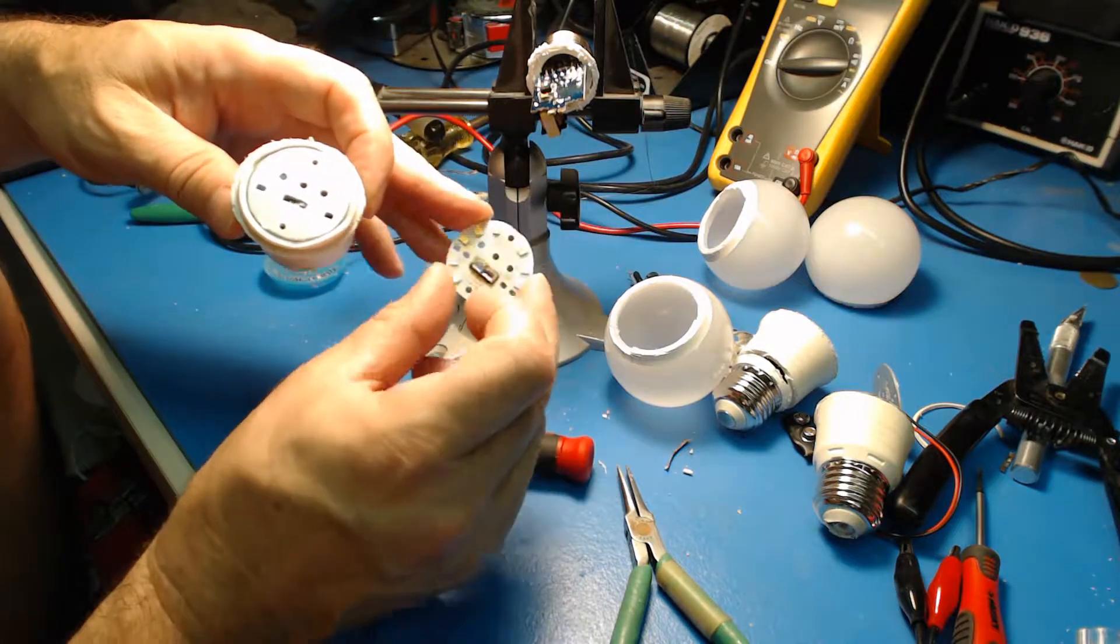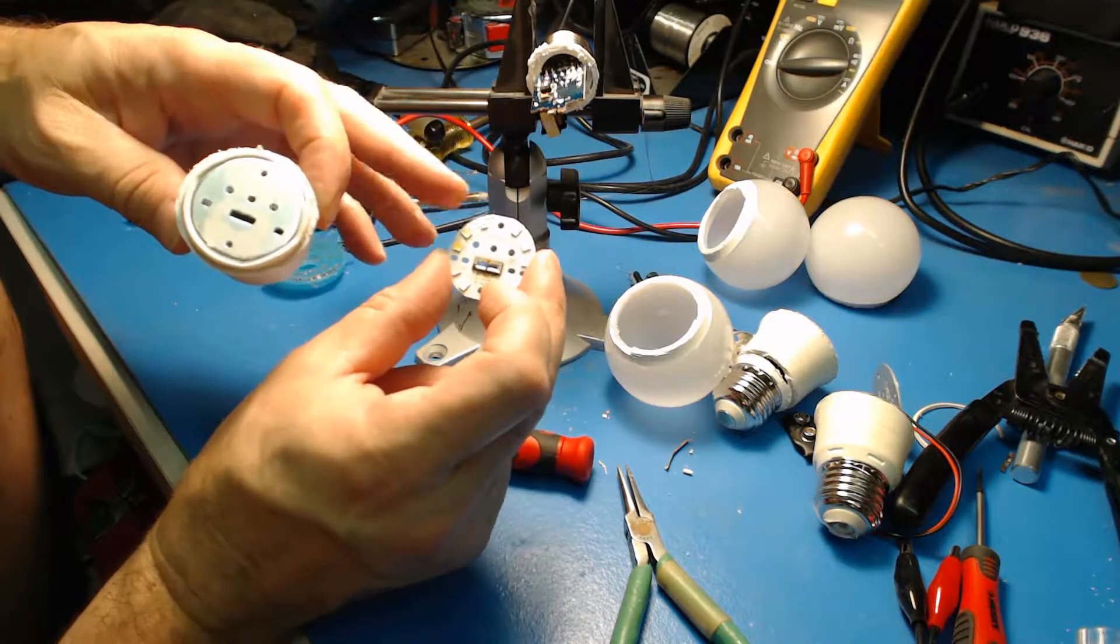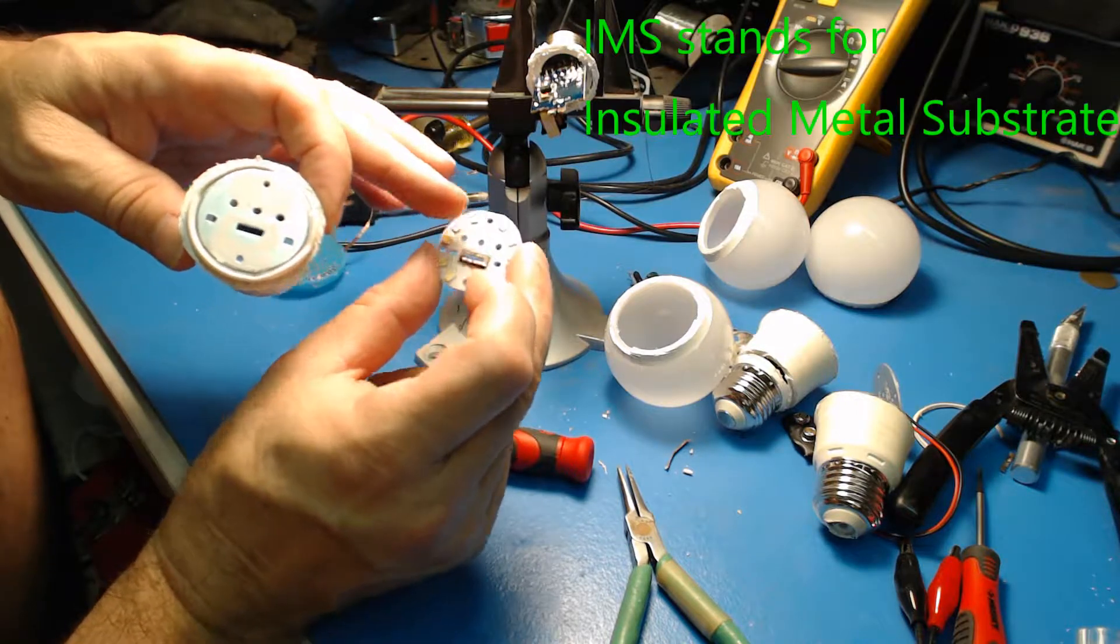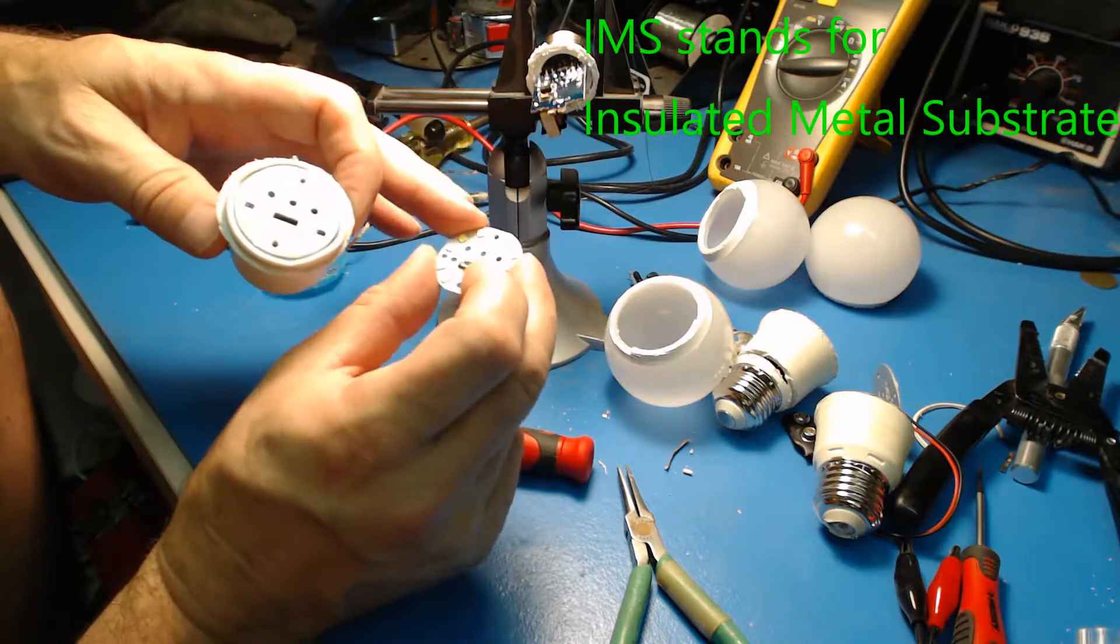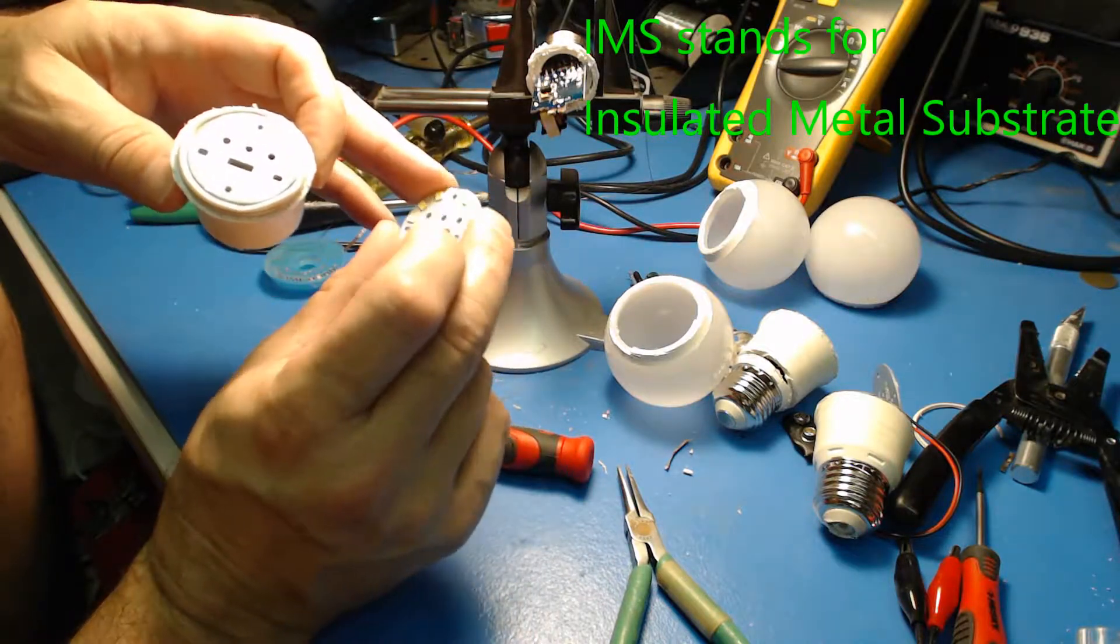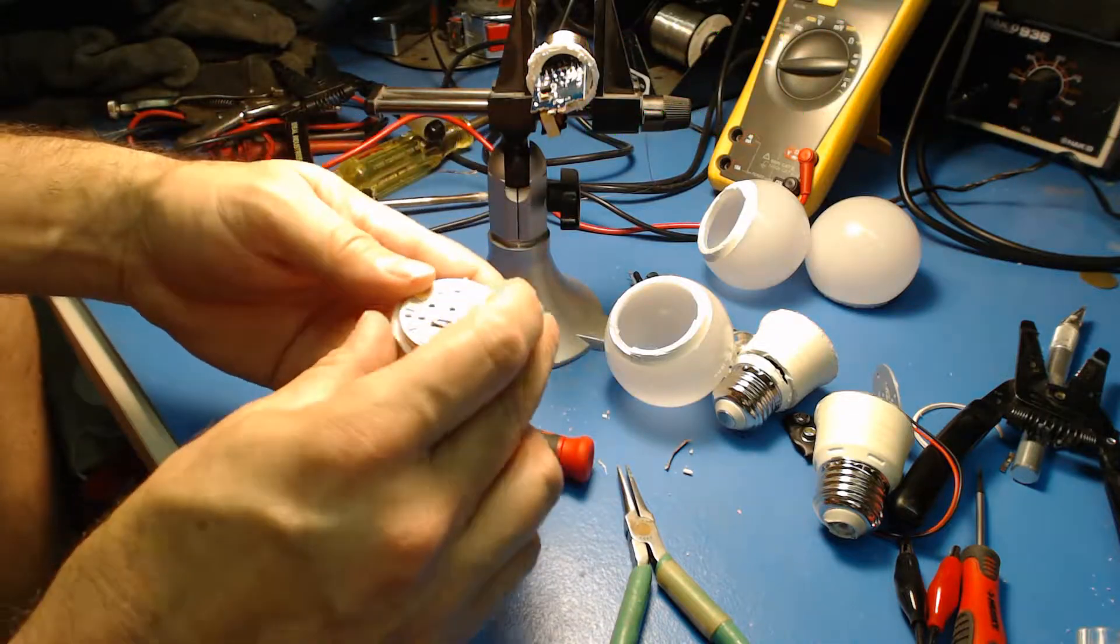The good thing that they've done is, which is better than what Cree had did, was they don't bend the IMS material at all. So there's no micro-fractures which moisture can get into. So that's actually quite good. Alright, so we'll set that aside for a moment.